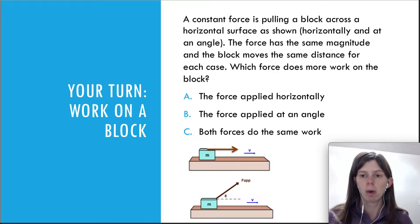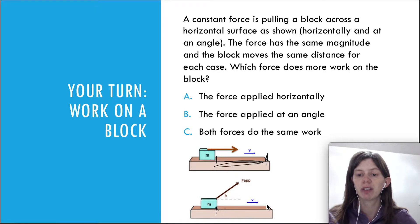So let's do one more question here in this video. So your turn to see if you understood the whole thing about the component of the force in the same direction as that motion. So a constant force is pulling a block across a horizontal surface as shown. So in the first picture it's pulling it horizontally and in the second picture at an angle. But these two forces have the same magnitude, they just have different directions. And the block is moving the same distance. So let's just assume the block is moving to the end of this little block here. So same distance, the magnitude of the force is the same, but the direction is different. So which force does more work on the block?